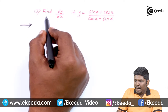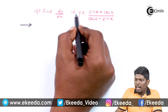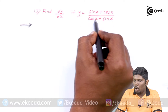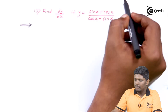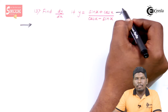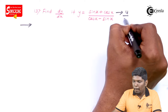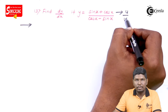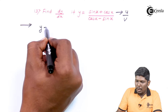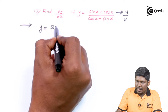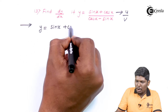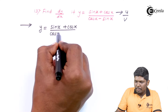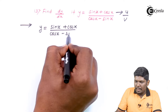We have to find dy by dx if y is equal to sin x plus cos x upon cos x minus sin x. The function is given in the form of u upon v, so we will solve it using the u by v rule. y is equal to sin x plus cos x upon cos x minus sin x.